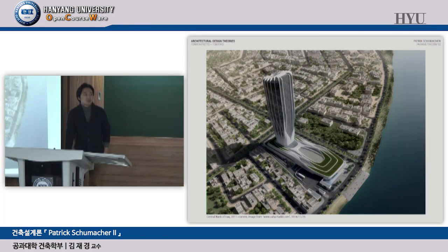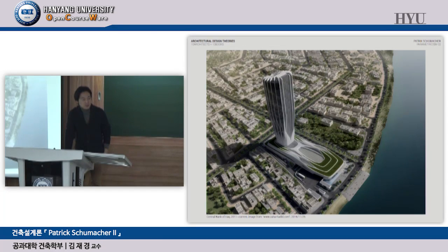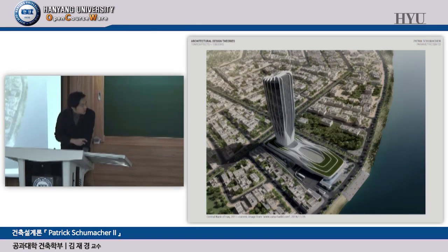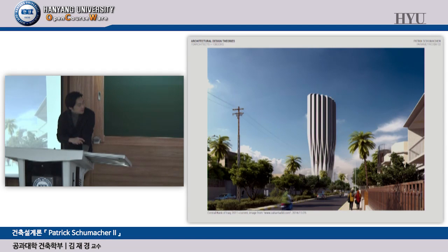Brutalism, to me, is generated from modern architecture but is also very avant-garde — brutalist architects tried to make different things. Communist architecture also used very geometric forms to create symbolic figures. There's an interconnection between these approaches. This is the central bank in Iraq — it looks very expensive but Iraq doesn't have money to build it.